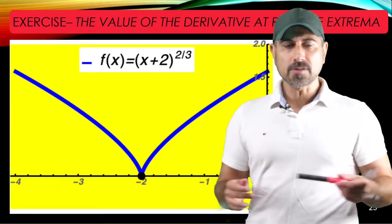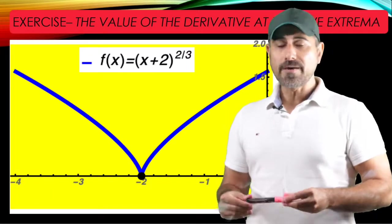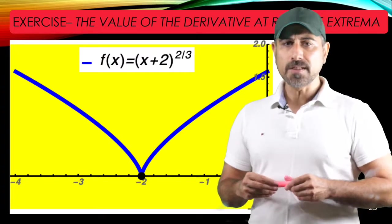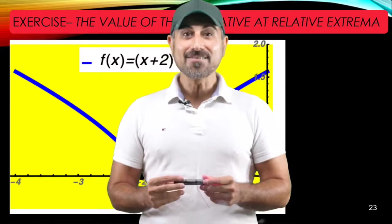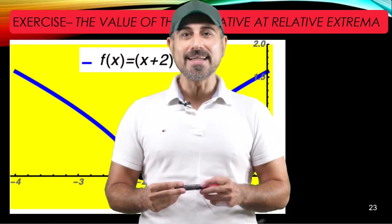To sum up, the points where f prime is equal to 0 or f prime is undefined would be the good candidates for relative minimum or maximum value. All right, this is the end of the video. Thanks for watching, I'll see you in another video. Bye.